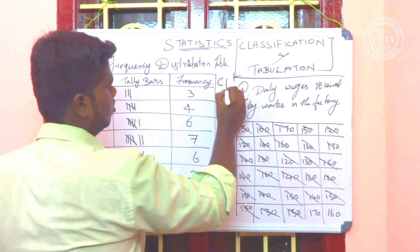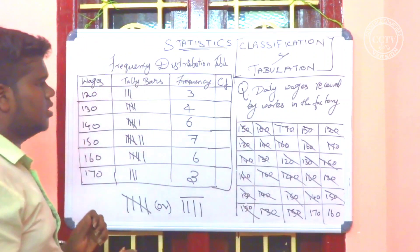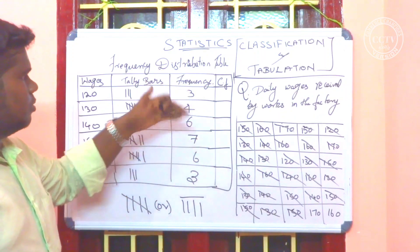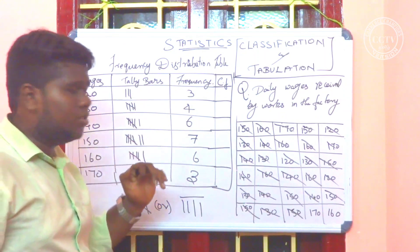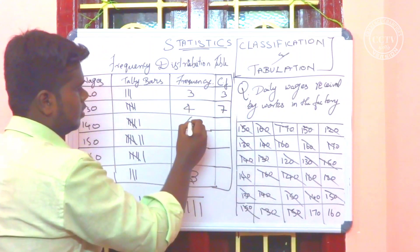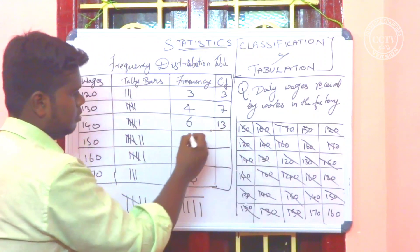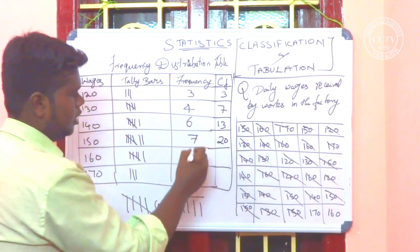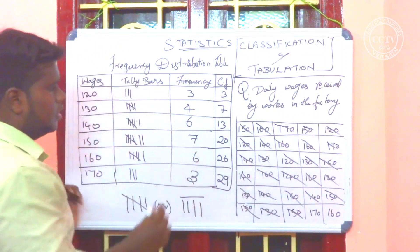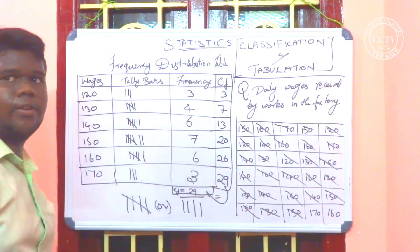Cumulative frequency is one of the totals. The total is: 7, then 7 plus 6 is 13, 13 plus 7 is 20, 20 plus 6 is 26, and 26 plus 3 is 29. So total is 29 — this is correct.